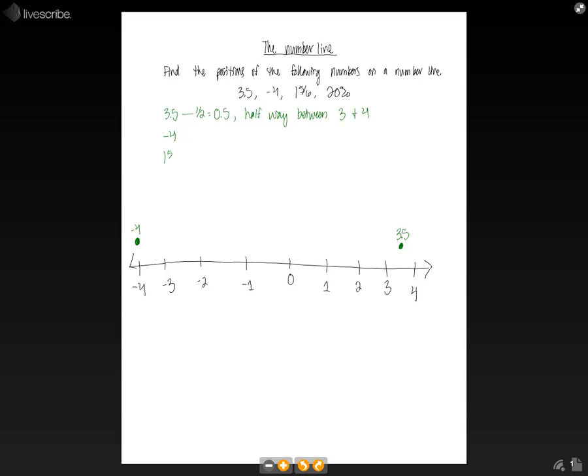And then the next number is 1 and 5 sixths. We know where the 1 is, but the fraction tells us how much further past 1 this number will lie. We know that 5 sixths is just a little less than 6 over 6, which is equal to 1. So 5 over 6 is just a little bit less than 1, and then we add our coefficient of 1.